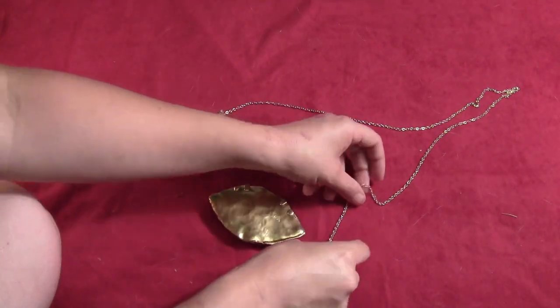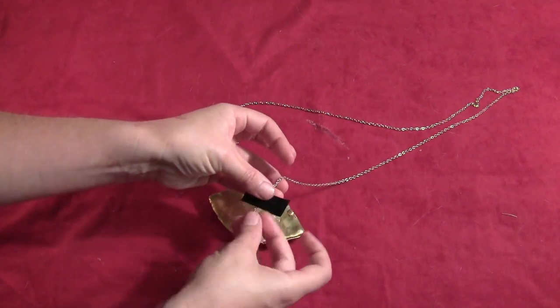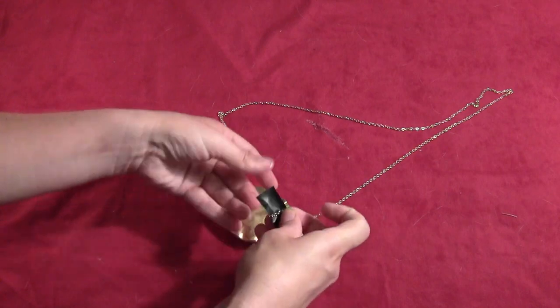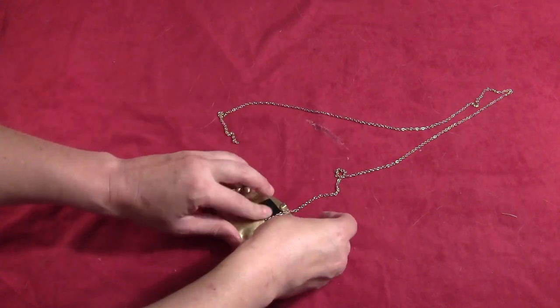And so hot glue does not work on this type of clay so take a piece of tape and wind your chain around it a couple times. And then stick it to the back of the amulet on both sides.